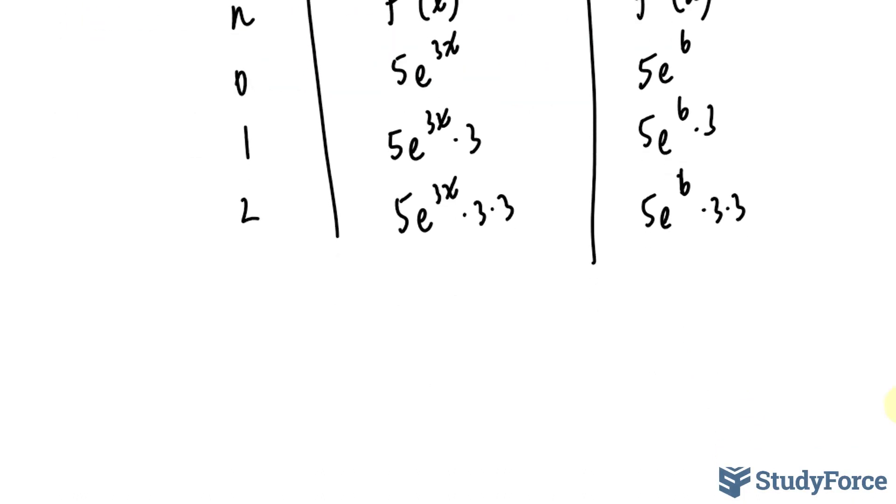I need to come up with a general pattern for the following, where f^(n)(2) equals, this part is repeating, so I can just rewrite that, 5e^6. And to represent this part, I can write down 3^n.